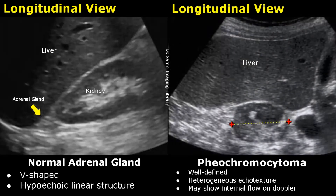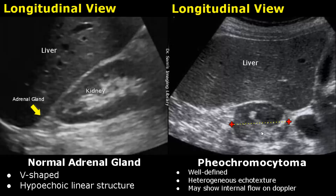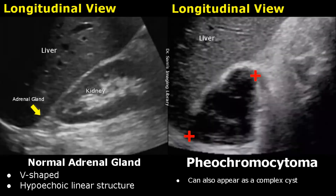A pheochromocytoma is another tumor that involves the adrenal glands. These also have variable appearances. The mass has a well-defined shape and usually has a heterogeneous echo texture, and it may also have internal flow on Doppler. A pheochromocytoma may also appear as a complex cyst — we can see internal echoes inside this cyst.